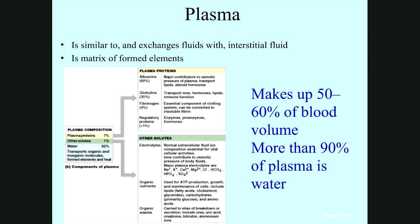Between 50 to 60 percent of the blood volume is plasma, and more than 90 percent of that plasma is water. Seven percent in this plasma are proteins: albumin, globulin, fibrinogen, and regulatory proteins. Fibrinogen is very important — it plays a role in clotting and can be converted to fibrin, which forms insoluble fibrin strands.